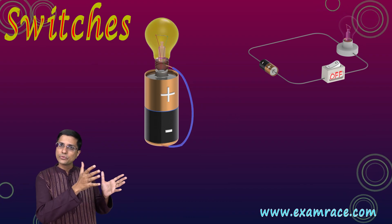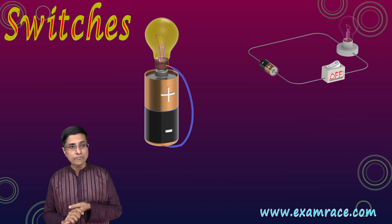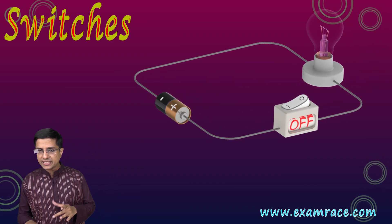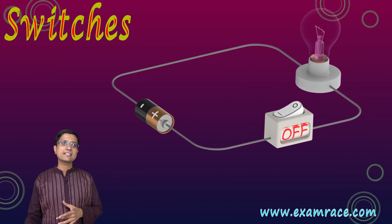The closed path along which the electrons flow — through the wires, through the battery, through the bulb — is known as a circuit. One of the other important elements inside our electrical circuit is a switch.